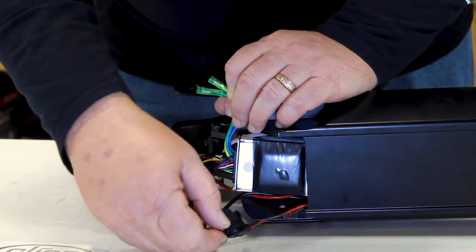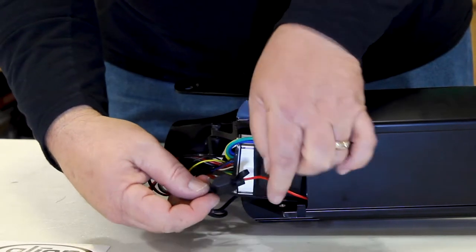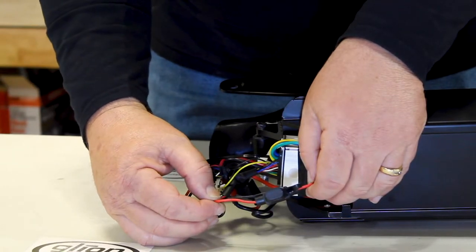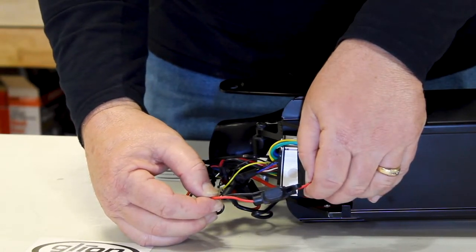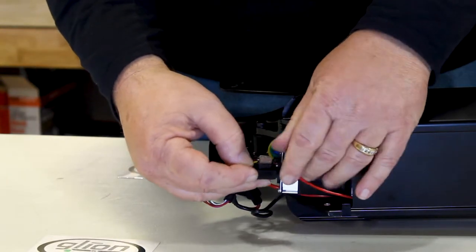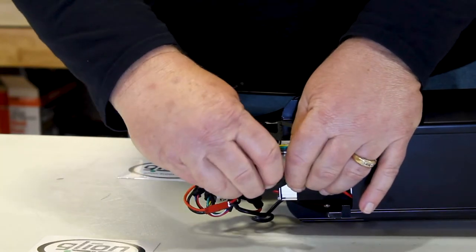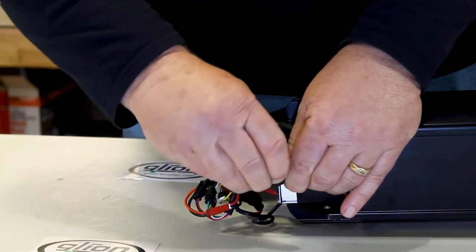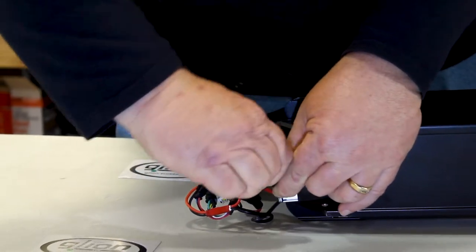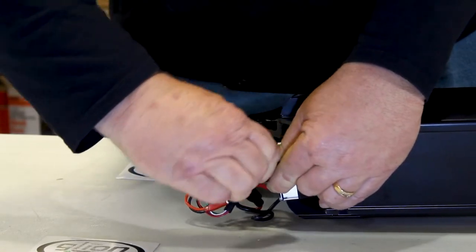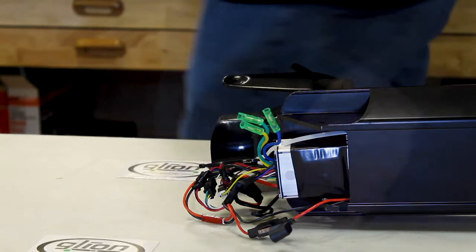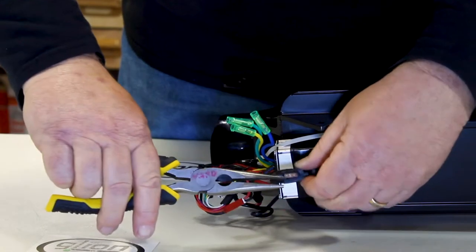You'll see a fuse here that has small diameter wires. That's the fuse that goes to the charger. We're going to take the fuse out and check it. Sometimes it can be tough. I'm going to get a pair of long nose pliers. Be careful not to squeeze too tight.